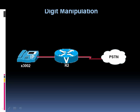Let's lay out a scenario that might require digit manipulation. Consider this topology: if we have a call coming in from the PSTN destined for an internal phone with a directory number of 3002, there are a couple of numbers we need to pay attention to. The called number, also known as the DNIS — the Dialed Number Information Service — and also the caller ID, sometimes called the ANI, Automatic Number Identification. As the call comes in, let's say the person on the PSTN dialed 303-3002 and their ANI is being presented as 230-3333.